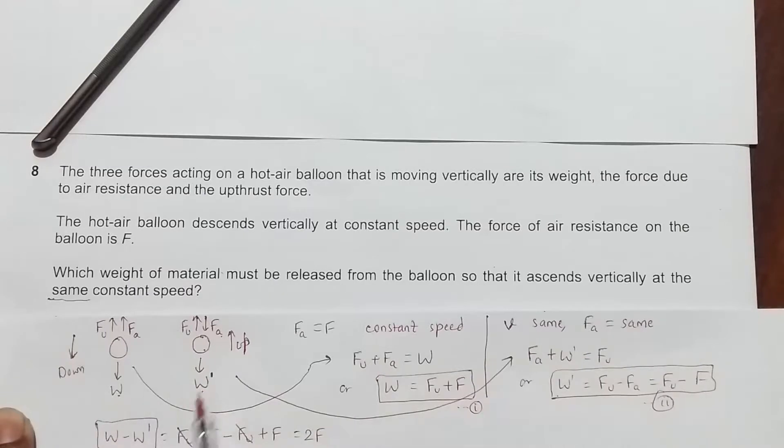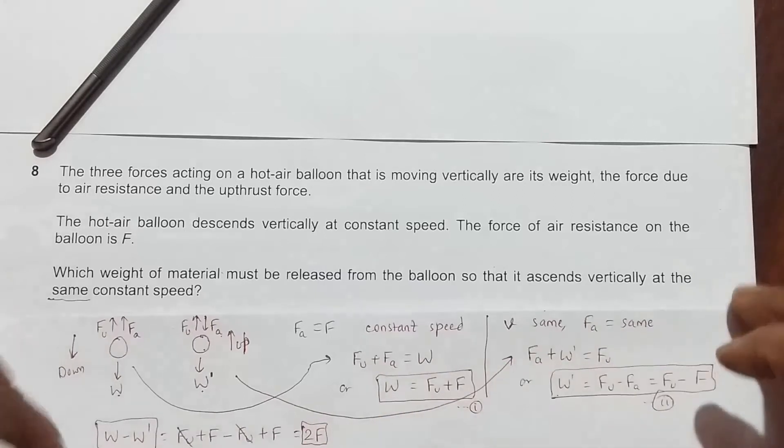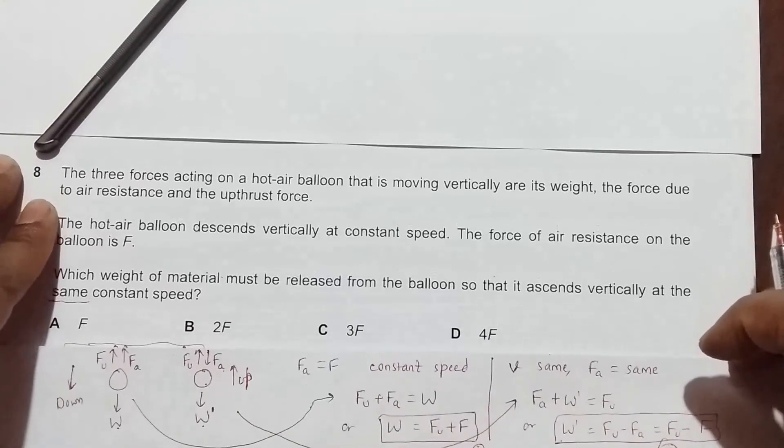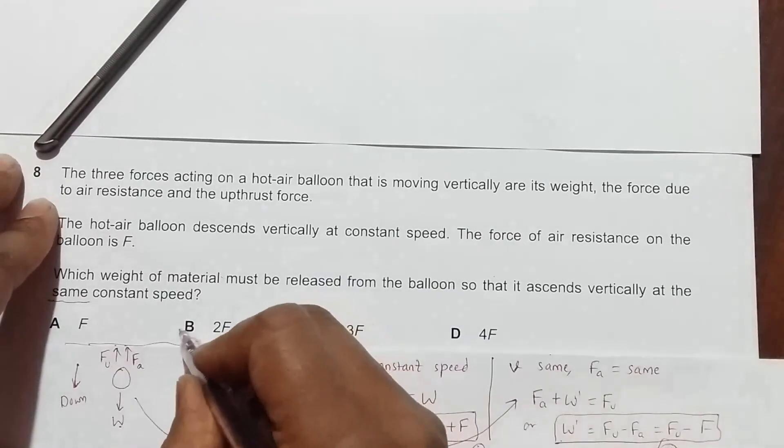The key thing is W minus W prime represents the difference in weight in this case and this case, meaning it represents the weight that we have taken off or the weight that has been reduced from the balloon. So the answer should be twice F_A, which is in choice number B.